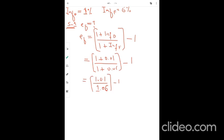Now we will actually divide 1.01 by 1.06, so we get a value of 0.95, 0.95 minus 1. And this will become, if I subtract it, this would become minus 0.047.